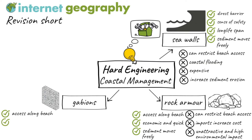Gabions are cheap and easy to construct and can last 20 to 25 years. Additionally, gabions do not restrict sediments from moving along the coast.